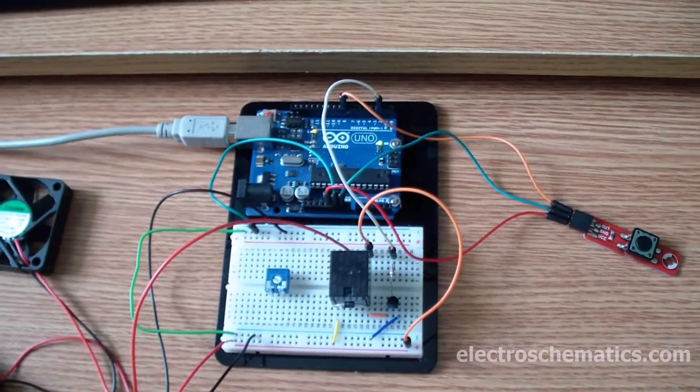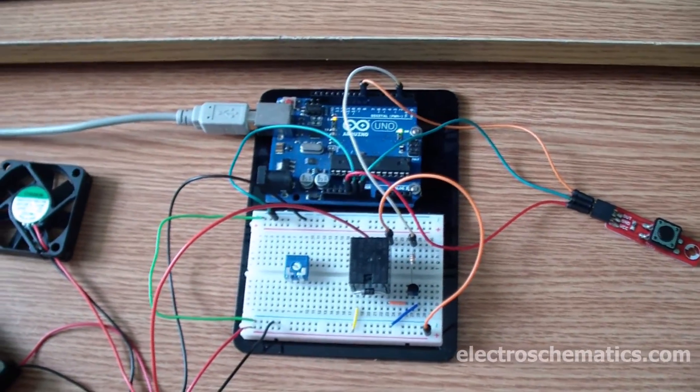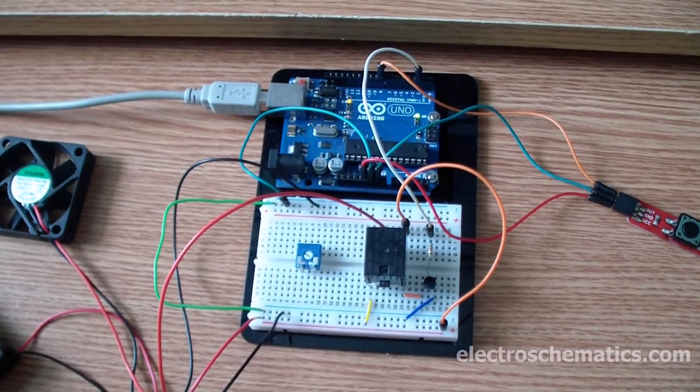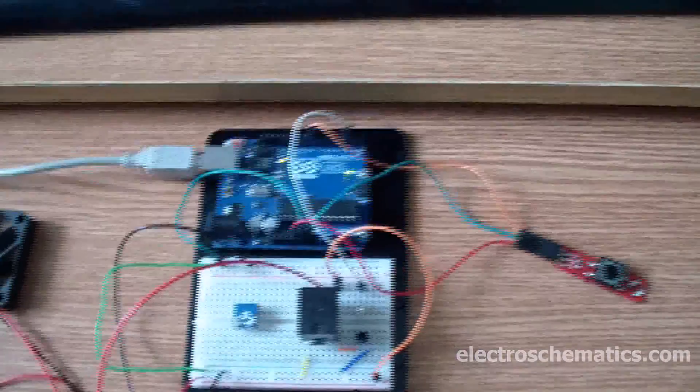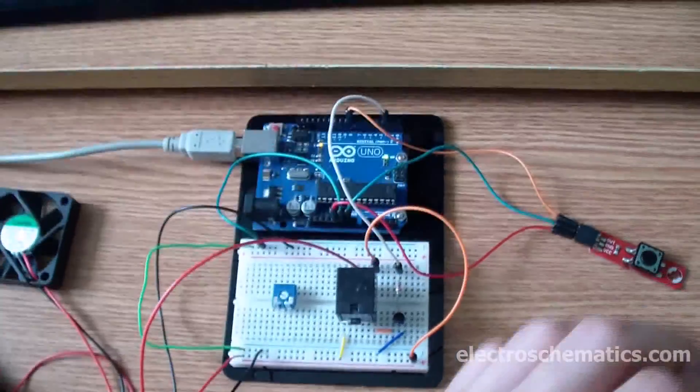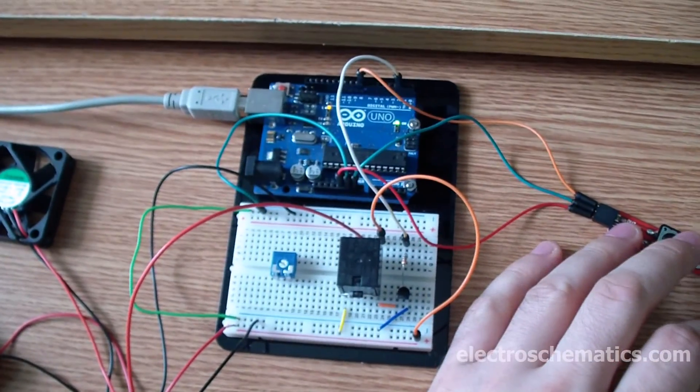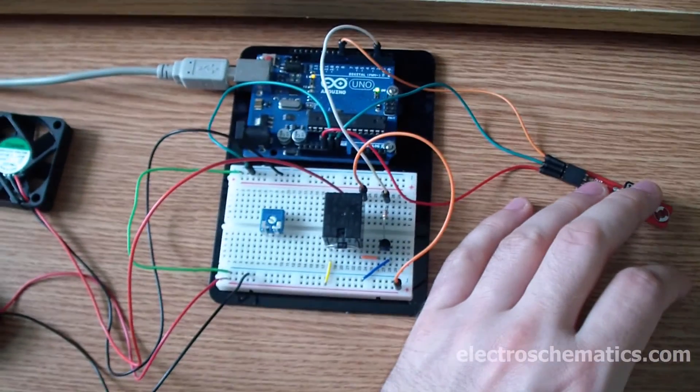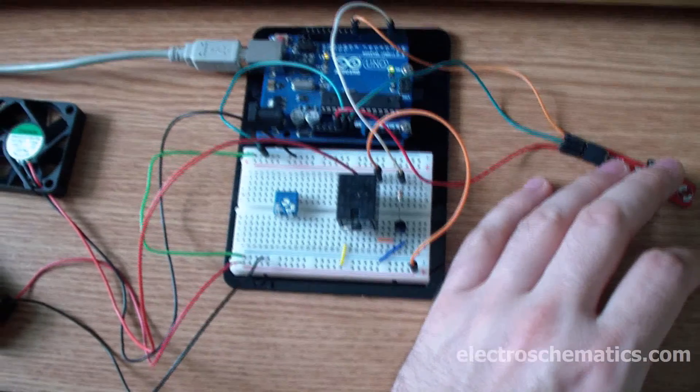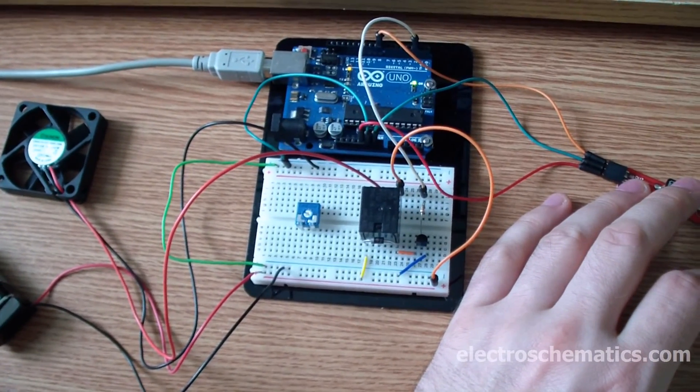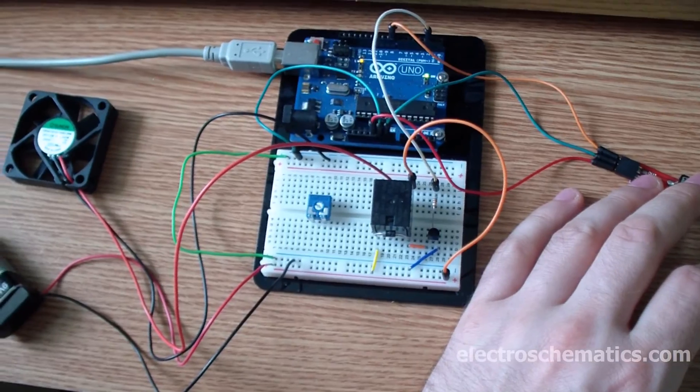A short video showing you how you can use the Arduino to introduce a delay. It's very simple. For example, you can use it when you want to turn off the light after a certain amount of time after you press the switch.